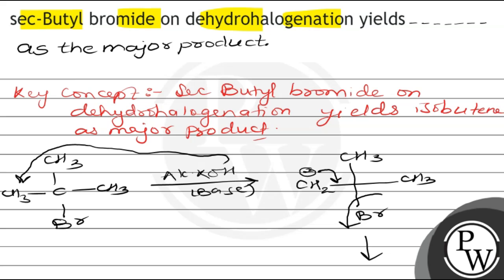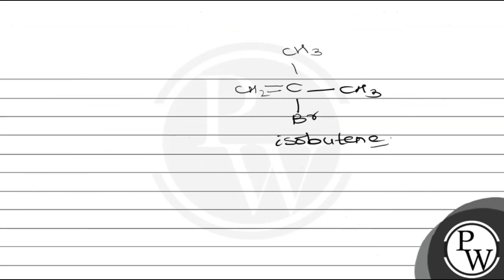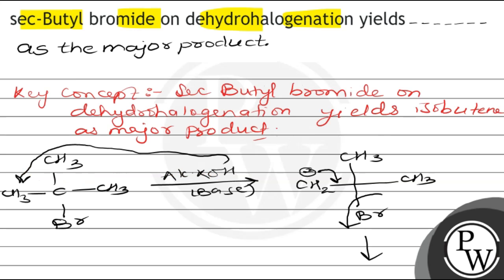So the answer to this question is isobutene. The complete statement is: sec-butyl bromide on dehydrohalogenation gives isobutene as the major product. Hope you all understand it well, thank you.